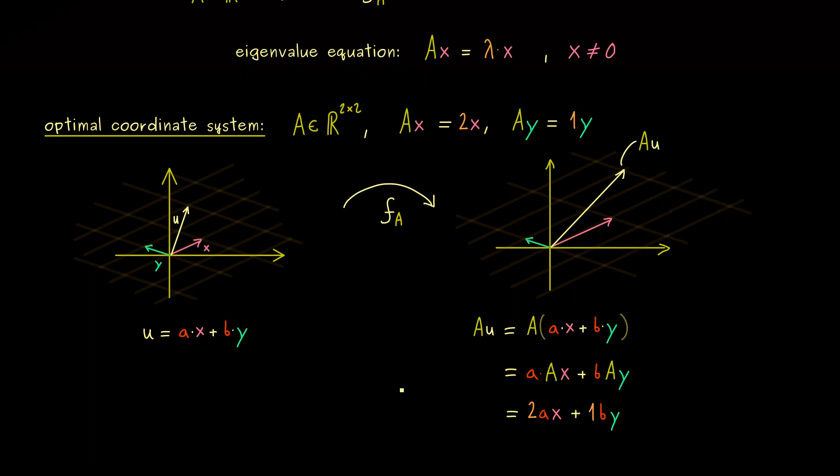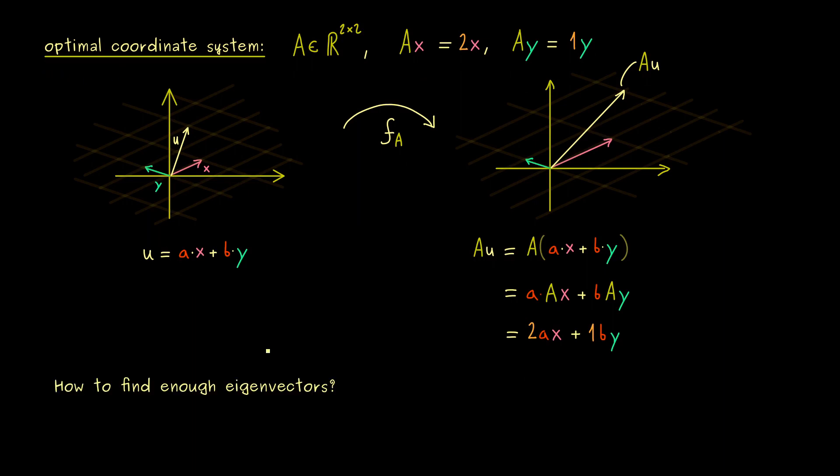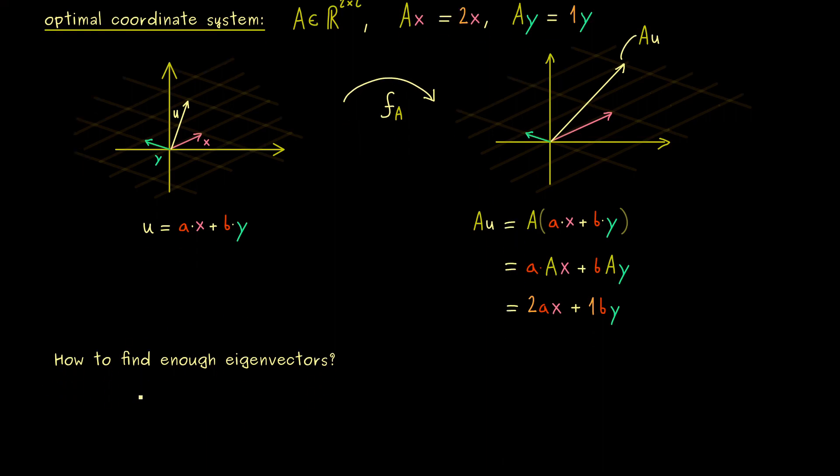So in other words, by knowing these two eigenvectors, the calculation with the matrix A gets very simple. And with that, we immediately see the big advantage of eigenvectors. If we find enough eigenvectors, we can form such an optimal coordinate system. Therefore, the important question we have to answer in this video is how do we find enough eigenvectors. And indeed, we will see that the so-called characteristic polynomial is an important ingredient to answer this question.